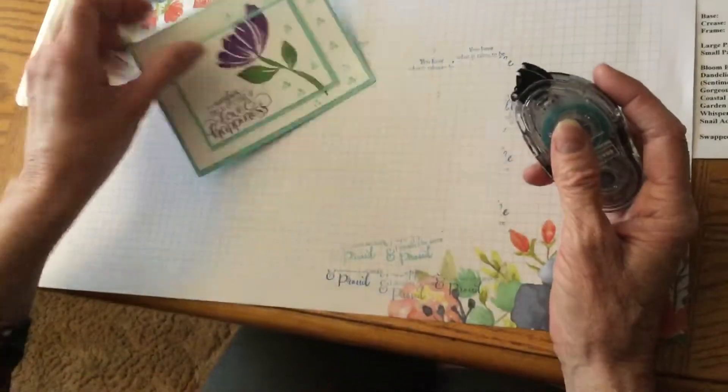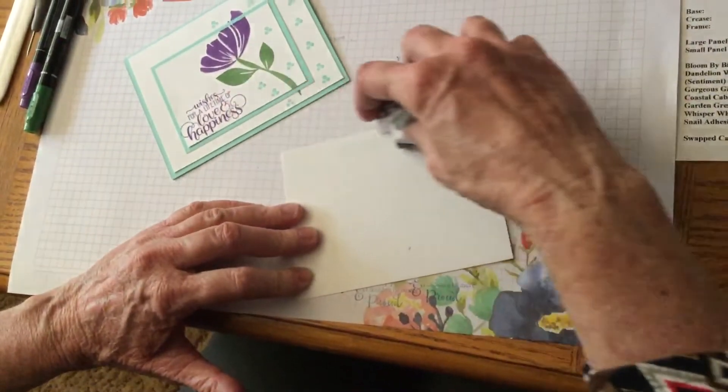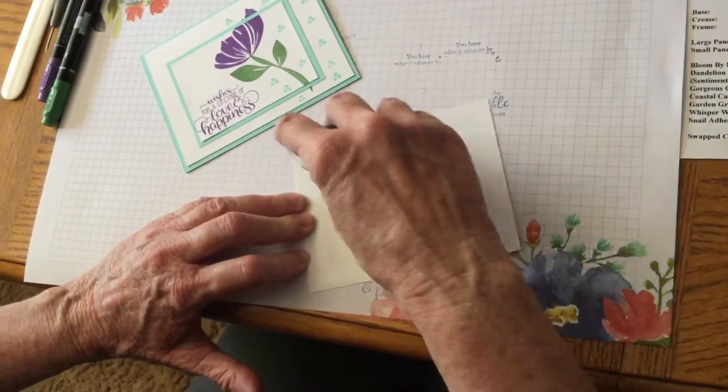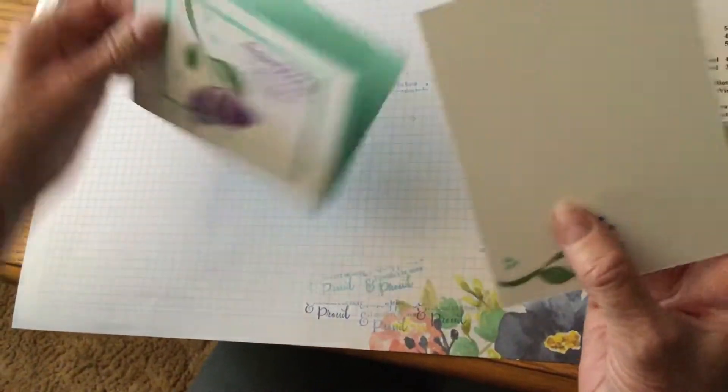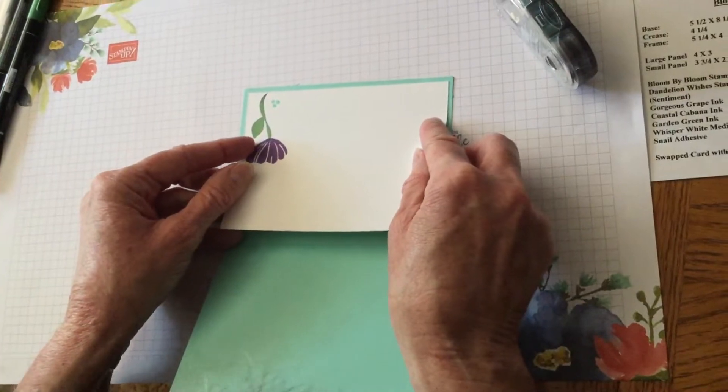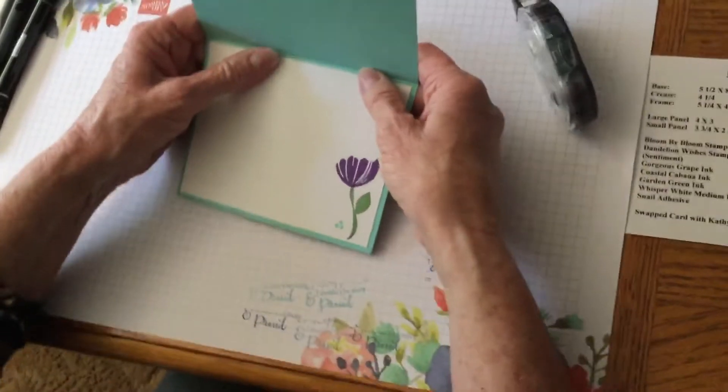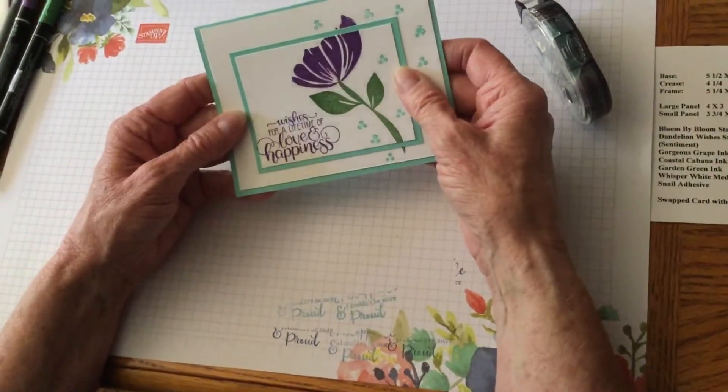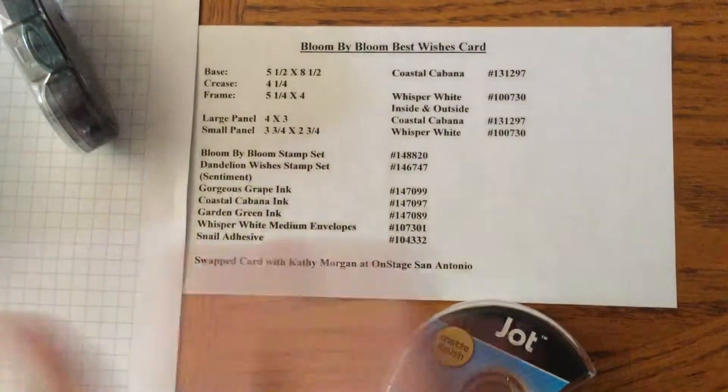This would make it just a really cute card for any occasion. So now we're going to want to do the inside. I'm going to open that up and line that up on the inside. And there's just another lovely card. And remember, it's the Bloom by Bloom Best Wishes card. Thanks again to Kathy Morgan for swapping with me at On Stage San Antonio.